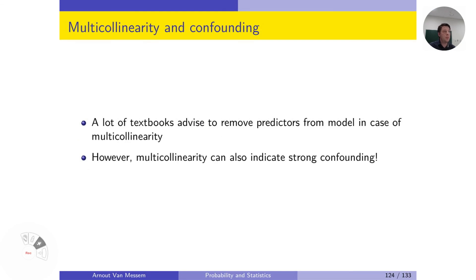One final remark. A lot of textbooks advise to remove predictors from the model if there is multicollinearity. So they say if there is multicollinearity, just throw them out. However, multicollinearity can also indicate a strong confounding, and so it is better not to throw them out, but to rely on more advanced techniques and other techniques of regression.